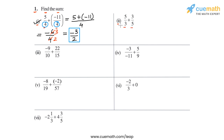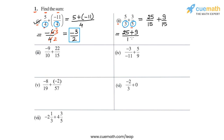The denominators in this case are 3 and 5. The LCM of 3 and 5 is 15. So let's convert both of them to equivalent rational numbers with denominator 15. So 5/3 can be written as 25/15, and 3/5 can be written as 9/15. So we get 25/15 + 9/15. Now we add the numerators: 25 + 9 = 34, so we get 34/15. That completes part 2.